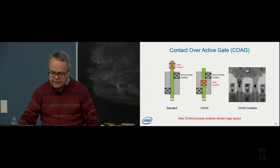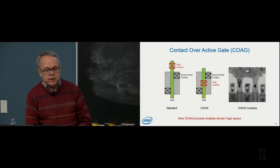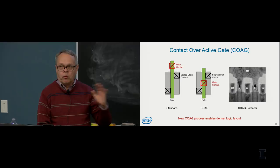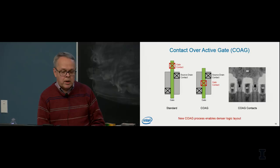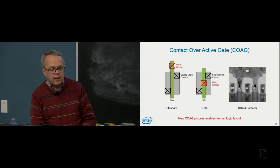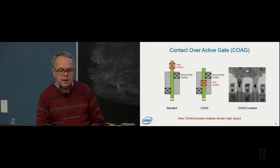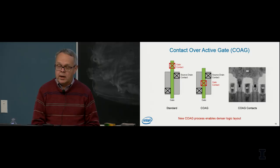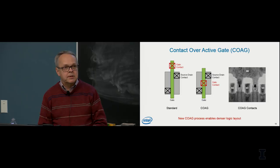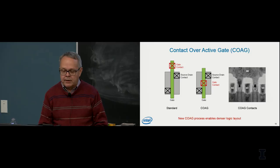The other new invention is contact over active gate, or COAG. The standard layout since the MOSFET era requires the gate contact to be placed off the active region, on top of the isolation region, to avoid shorting to the source-drains — wasting area. We developed the COAG process that allows the gate contact to be placed right over the active gate, not wasting any area. A cross-section micrograph shows the contact coming right down, self-aligned to the gate electrode below it, without shorting to the source-drain on either side.